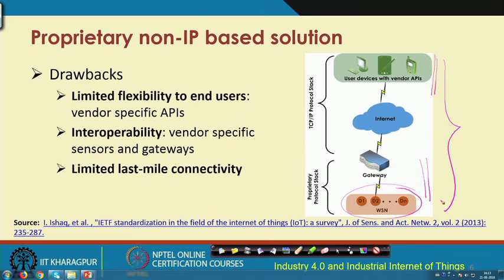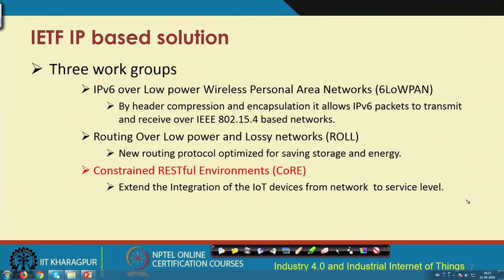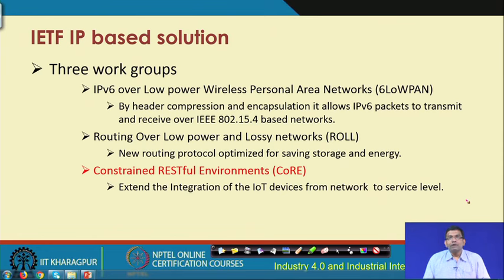Interoperability is the issue which talks about conquering the challenge of heterogeneity in all different respects. The last drawback is limited last-mile connectivity - most of these non-IP based solutions offer limited last-mile connectivity because these are not models supposed to scale up, unlike IP ones. IP has been designed in such a way that scalability can be maintained - it is a scalable solution, unlike these proprietary vendor-specific solutions which are limitedly scalable.